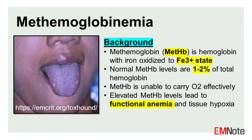Methemoglobinemia is a clinical condition characterized by an abnormal elevation of methemoglobin in the blood. Under normal physiological conditions, methemoglobin levels are maintained at 1-2% of total hemoglobin.